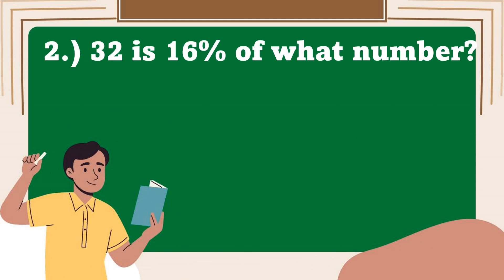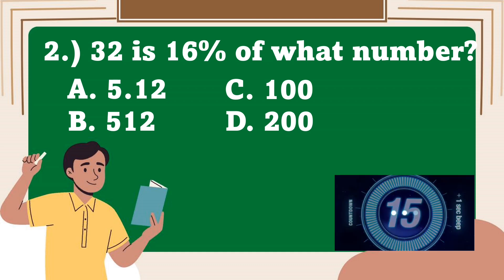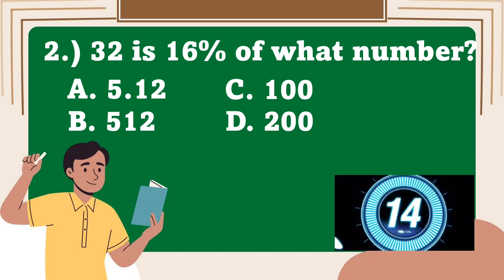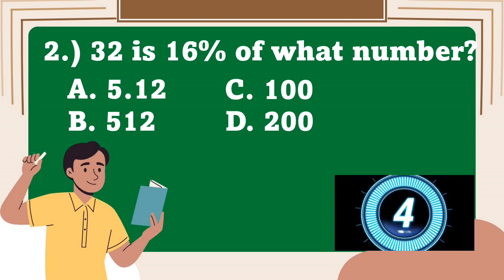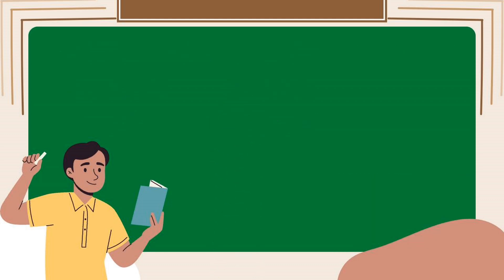Number 2. 32 is 16% of what number? A. 5.12, B. 512, C. 100, D. 200. Your timer starts now! The correct answer is D. 200.